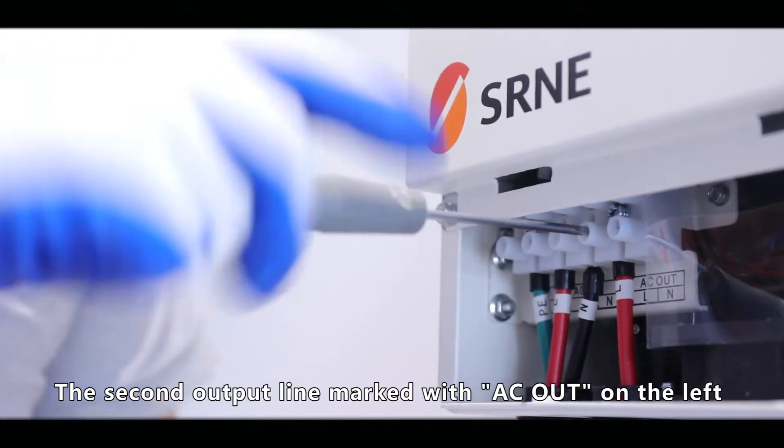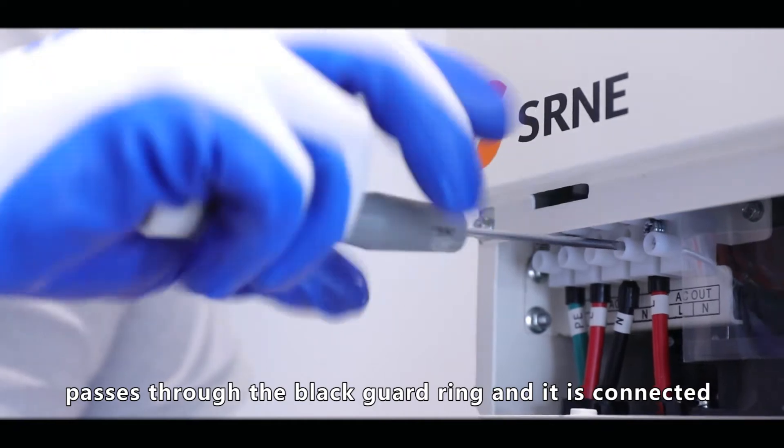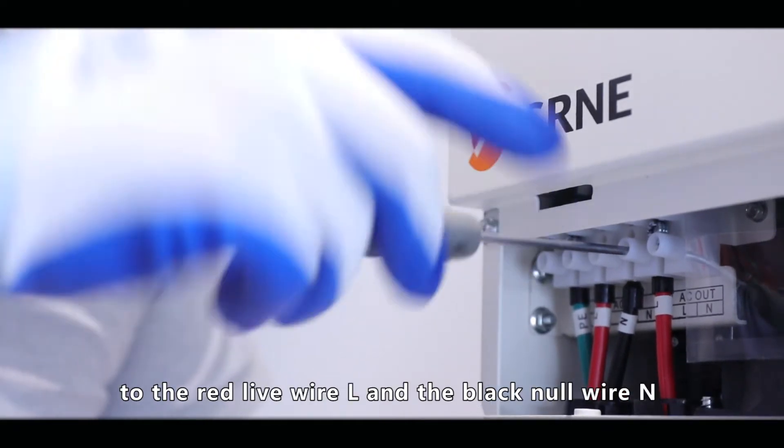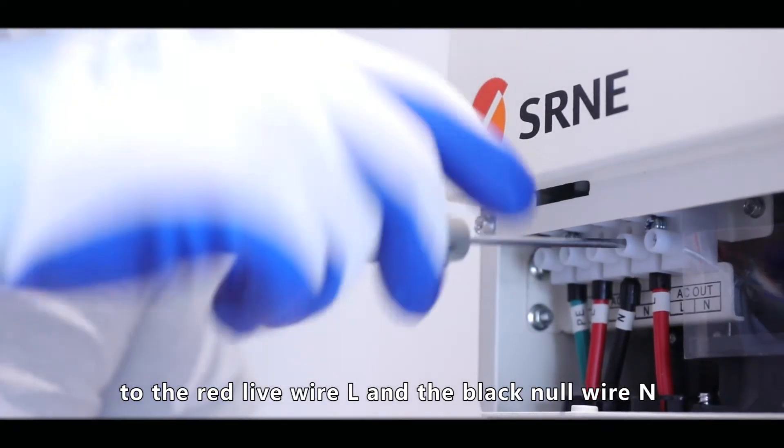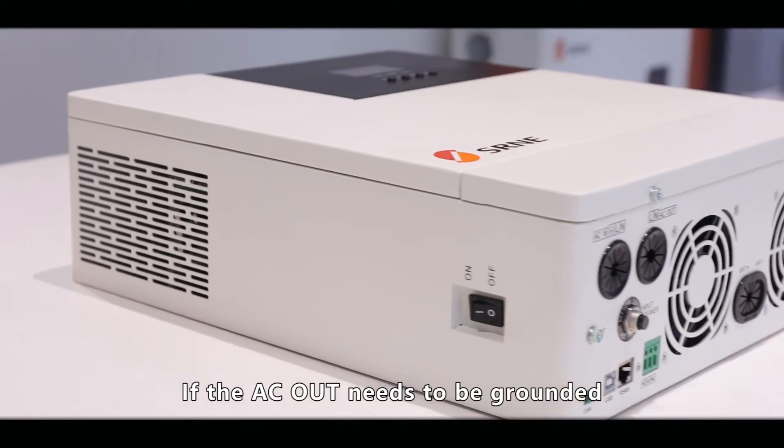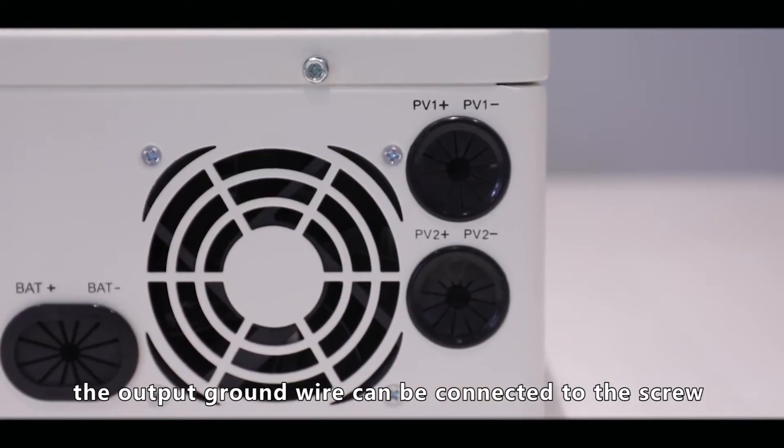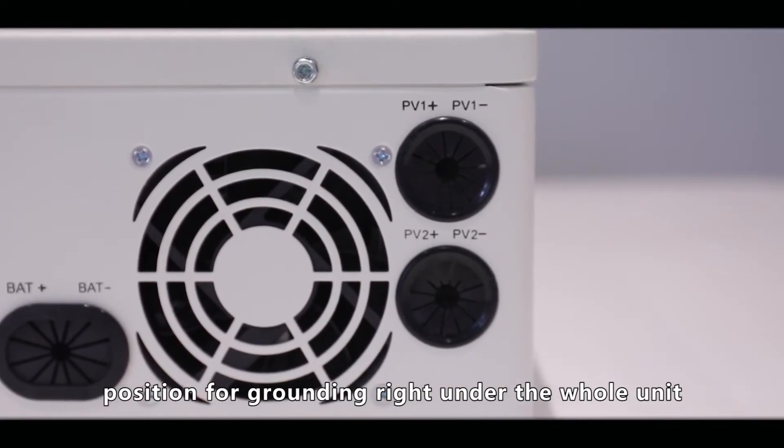The second output line marked with AC out on the left passes through the black guard ring and is connected to the red live wire L and the black null wire N with the screwdriver. If the AC out needs to be grounded, the output ground wire can be connected to the screw position for grounding right under the whole unit.